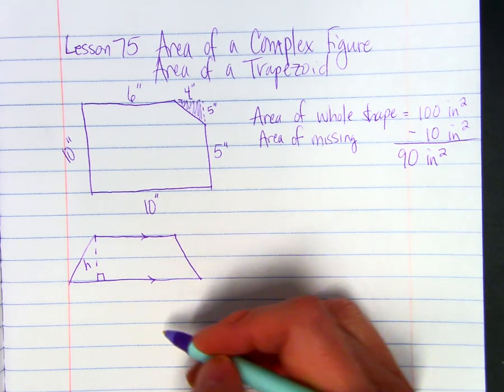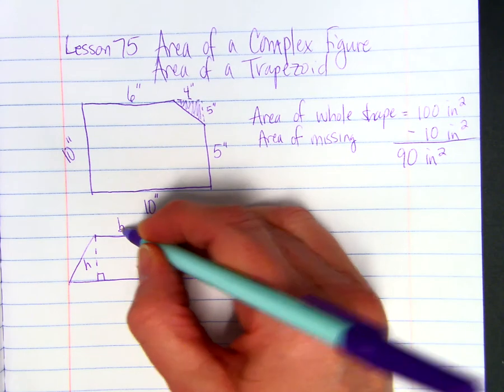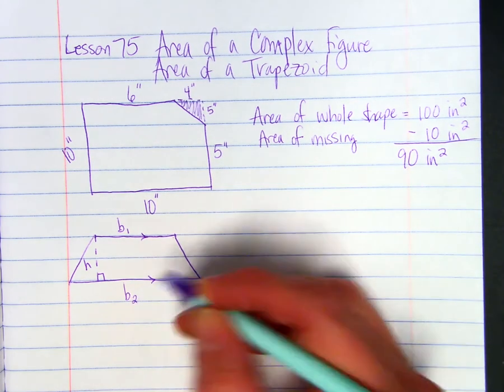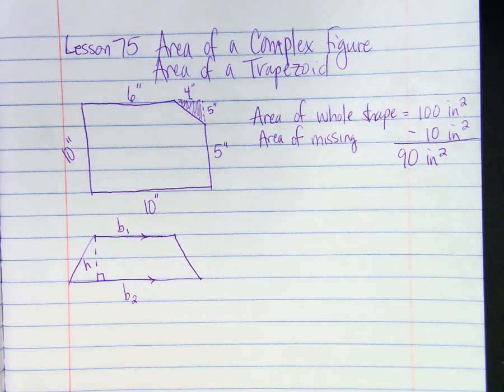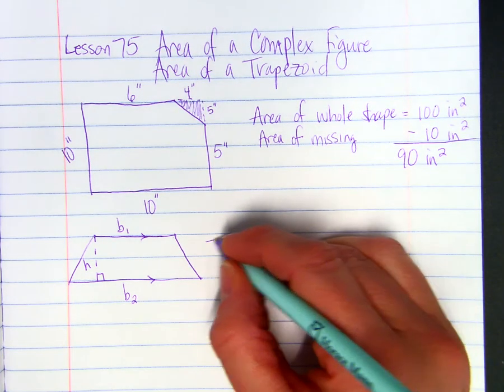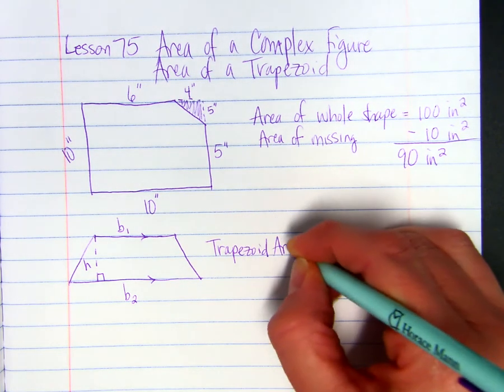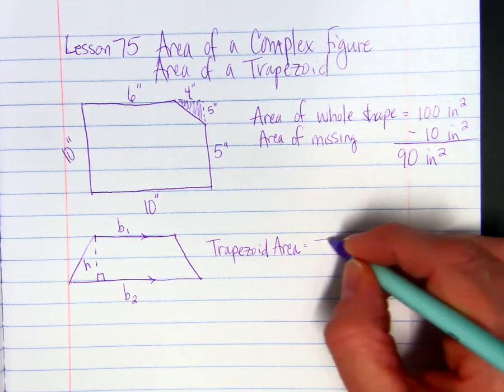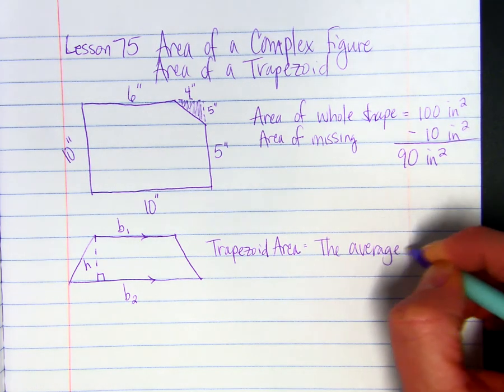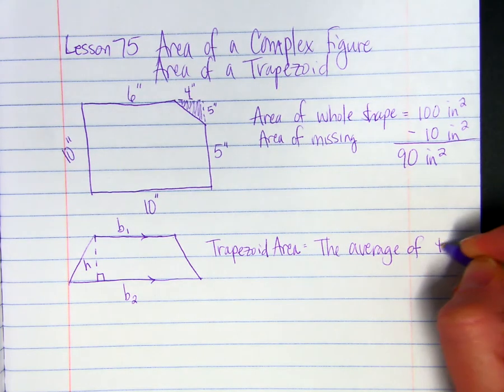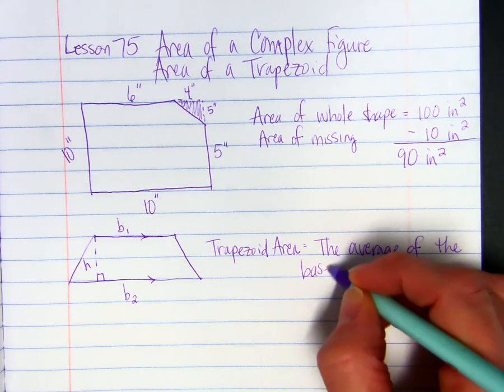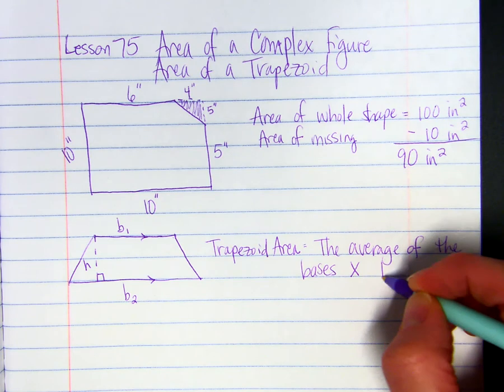put little arrows in there so that we know they're parallel. Base sub 1, base sub 2. We call those bases. The area of a trapezoid: the average of the bases times the height.